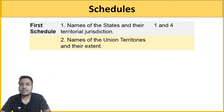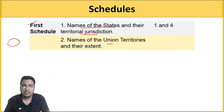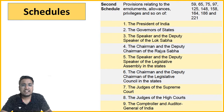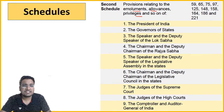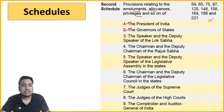Let's go through all 12 schedules. The 1st Schedule contains the name of the states and their territorial jurisdiction, and the names and extent of union territories — covered by Articles 1 and 4. The 2nd Schedule contains emoluments, allowances and privileges of specified positions — President of India, state governors, Speaker and Deputy Speaker of Lok Sabha, Chairman and Deputy Chairman of Rajya Sabha.